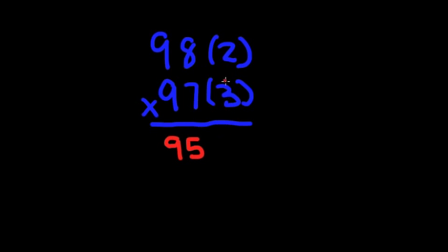Next, you multiply the two numbers in parentheses together. 2 times 3 equals 6, but since it's less than 10, you've got to put a 0 in front of it, so it's 06. So, the answer to 98 times 97 is 9,506.